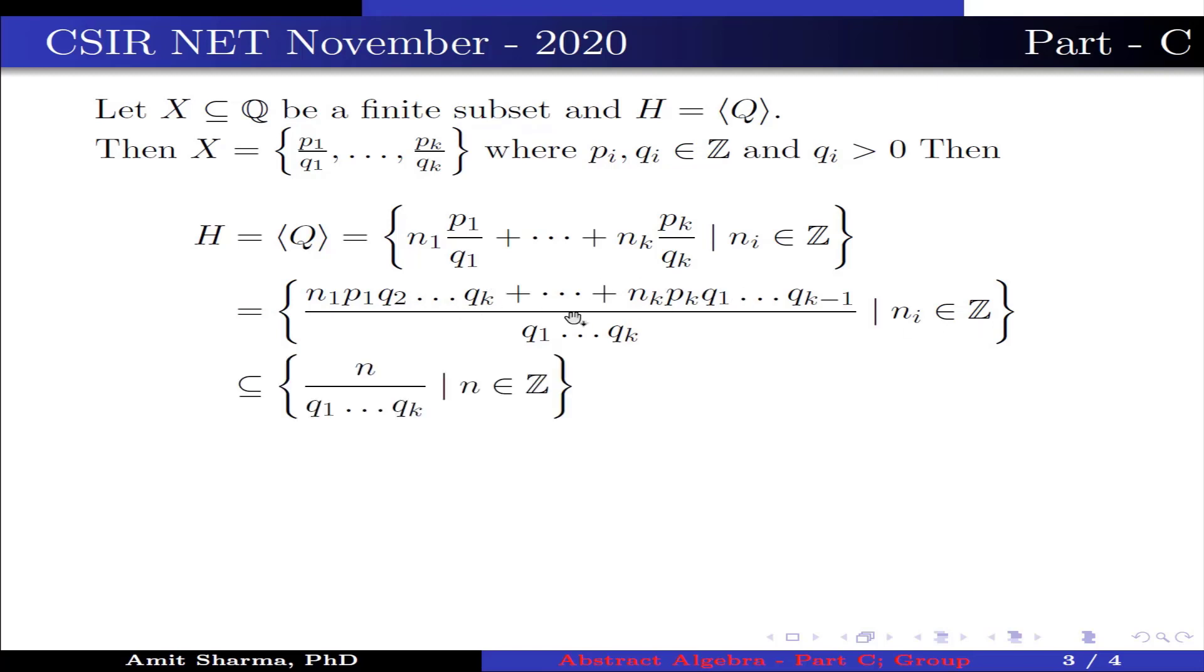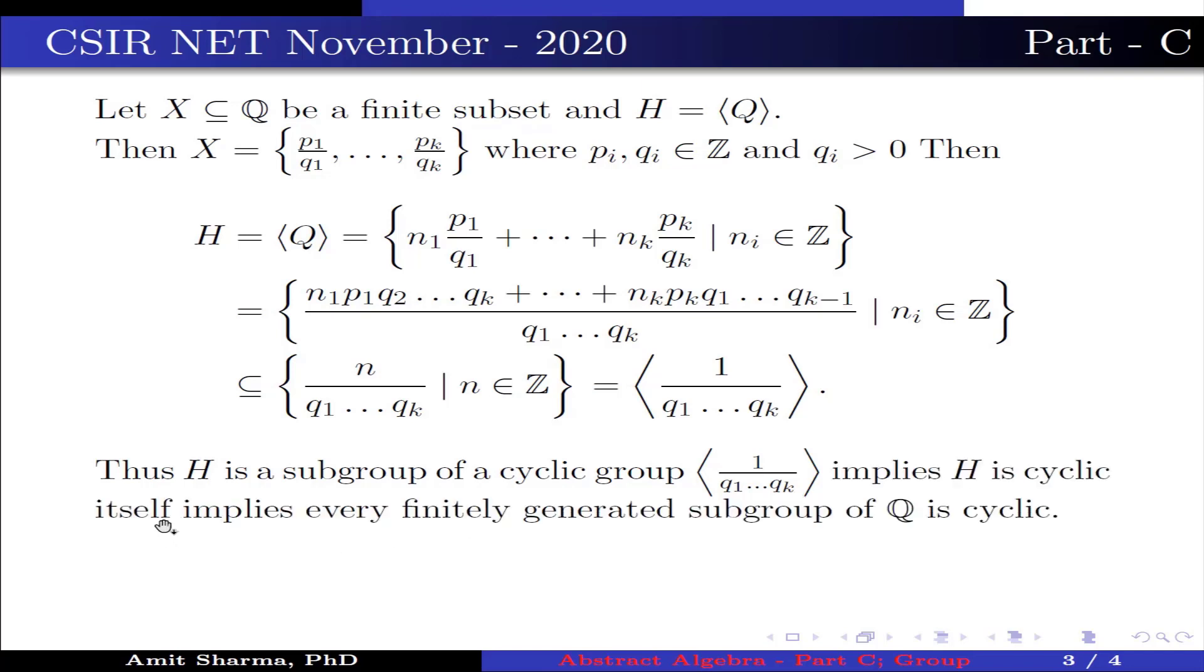Since the numerator belongs to integer Z, this is further written as a subset of {n / q₁...qₖ | n ∈ Z} = ⟨1/q₁...qₖ⟩. Thus H is a subgroup of a cyclic group generated by 1/q₁...qₖ, and we know the subgroup of a cyclic group is cyclic. This implies H is cyclic itself. This implies every finitely generated subgroup of Q is cyclic. Therefore, option 3 is true.